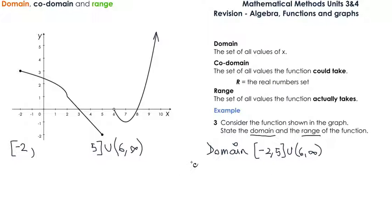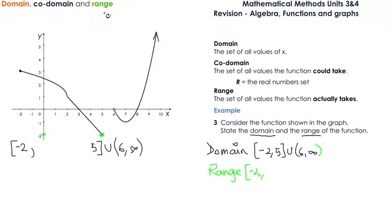Now let's look at the range. For the range, we start with the lowest value of y, which is negative 2 and is a dot, so we use a square bracket. Looking at the function, it keeps going forever, so we have values for y all the way to infinity. The range is [−2, ∞). Thank you.